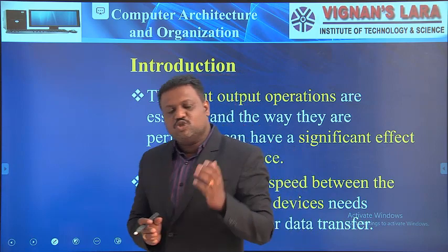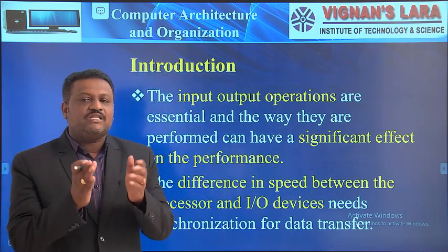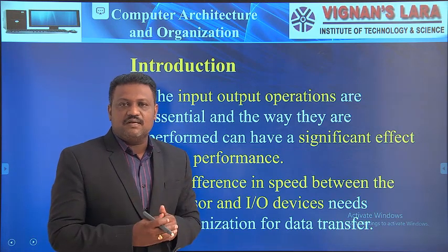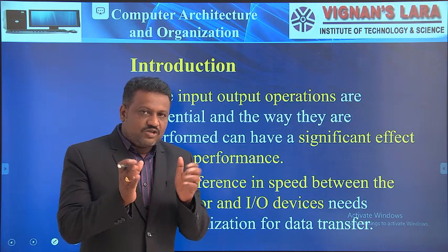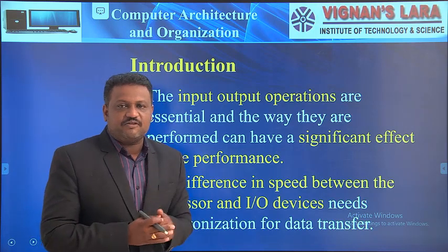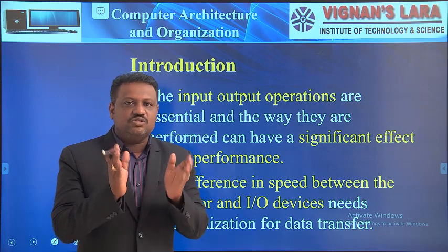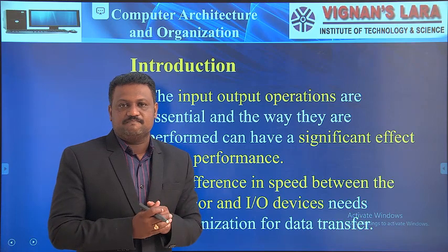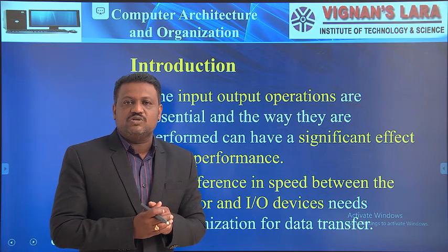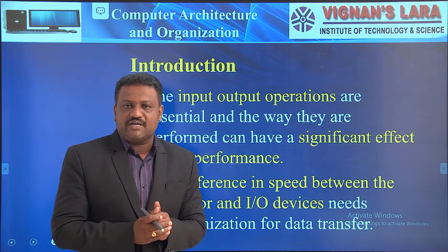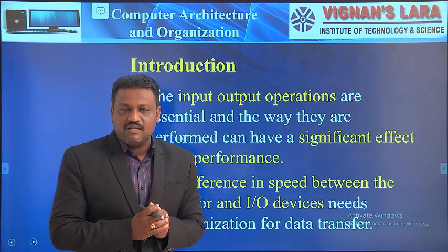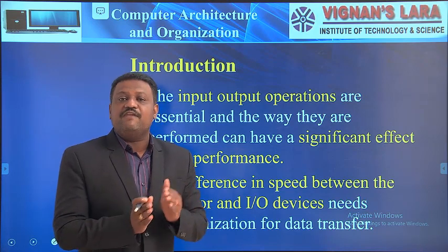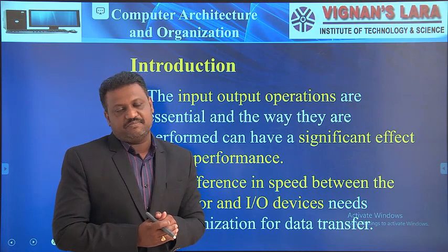These are very important because with the help of input and output devices the user can communicate with the computer system. Whenever the user wants to send something to the computer, they use input devices like a keyboard, mouse, or joystick. If the user wants to access something from the system, they use output devices like a monitor or printer. The way those operations are performed influences the speed of the computer system.